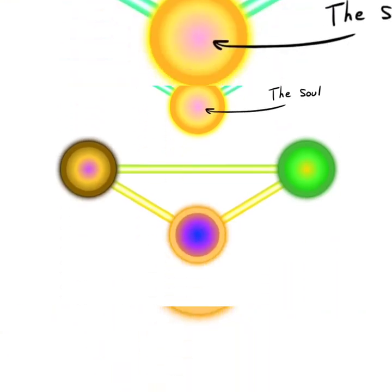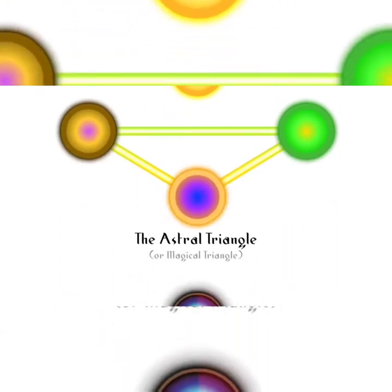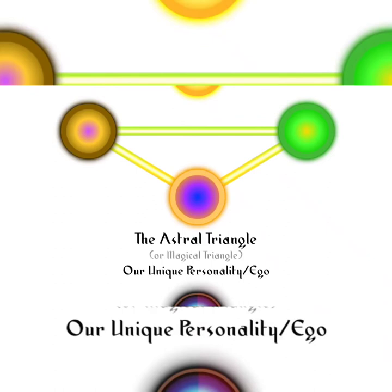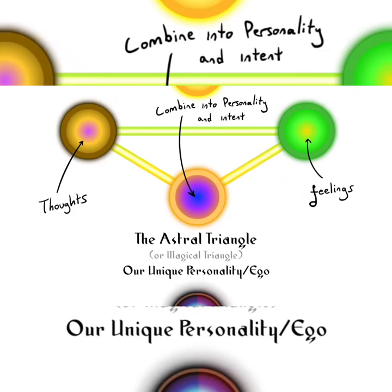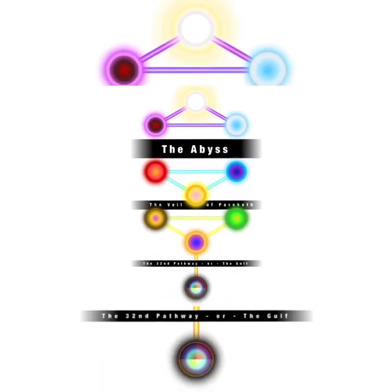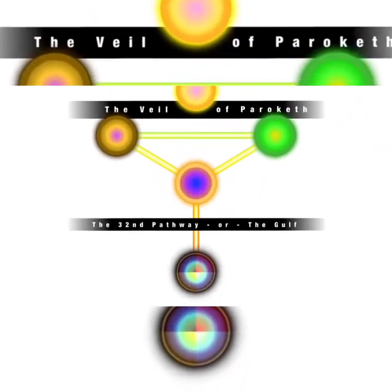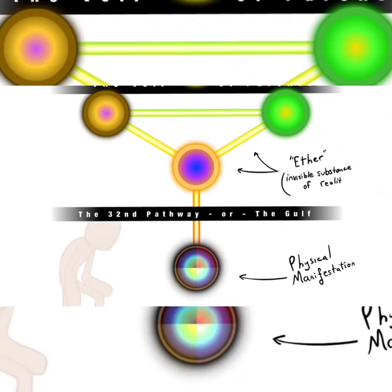The bottommost triangle is the Astral or Magical Triangle, which is the place where our unique egos and personalities are formed. The collective thoughts and feelings of our individual identity combine together and are channeled downwards through our bodies into the bottom Sephira and dictate how we live our lives. There are also three major barriers within the tree which symbolize our disconnection with nature and then how we can transcend them. The first barrier is called the 32nd pathway or simply called the Gulf, and is the connection between the physically manifested realm and the ether. Crossing this barrier is the realization that we are more than our physical bodies.